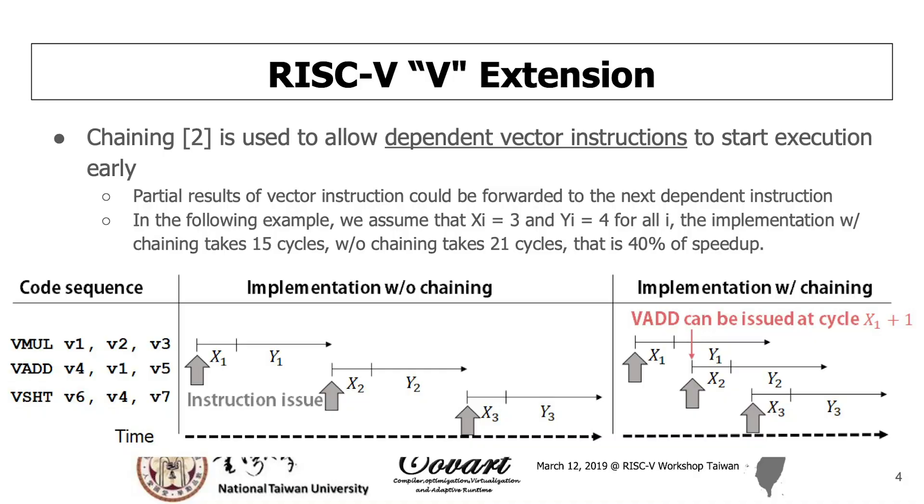I have to say first, if there are no dependencies between these instructions, they can be issued every cycle. But there are data dependencies in this instruction sequence. So vector A cannot be issued until the vector multiply completes. Here is the motivation for the chaining mechanism.